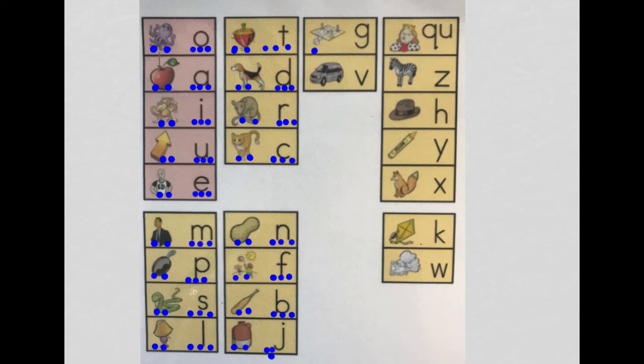Game, game. G, g, g. Van, van. V, v, v. Queen, queen. Qu, qu, qu, qu. Zebra, zebra. Z, z, z.